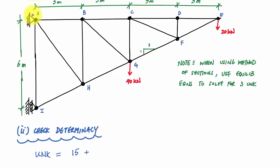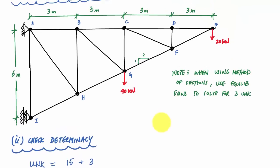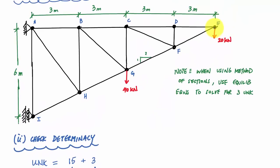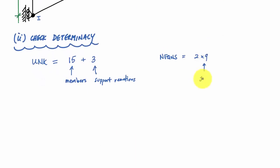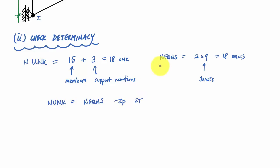Plus I have two reactions for the pin support and one roller support reaction — so three reactions — giving 18 unknowns total. Because of the hinges, I don't have moment equilibrium available at each joint, only two equilibrium equations: sum of forces in the horizontal and sum of forces in the vertical. I have 9 joints times 2 equations per joint, giving 18 equations. Since unknowns equal equations, this truss is statically determinate.